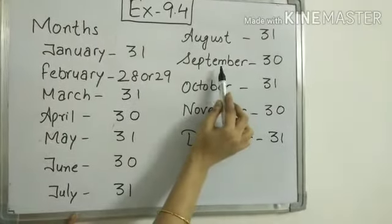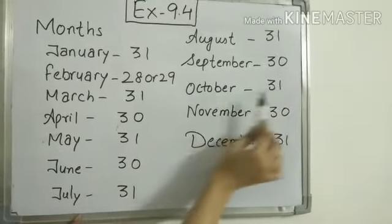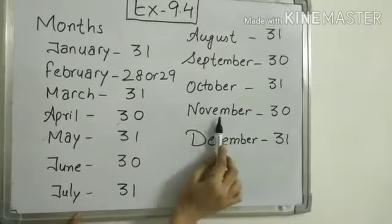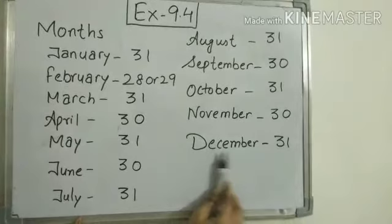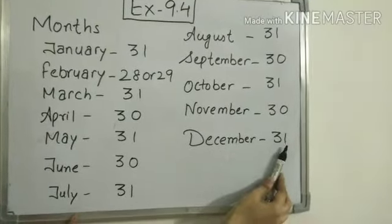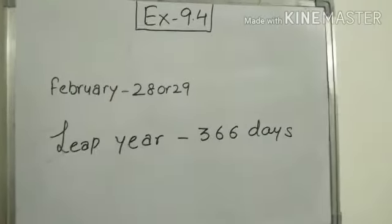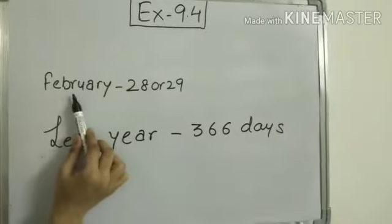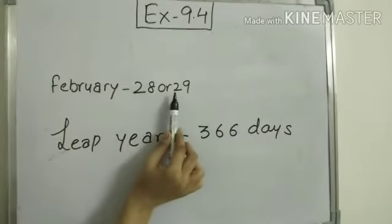August 31 days, September 30 days, October 31, November 30, and December has 31 days. So the point is February, why February has 29